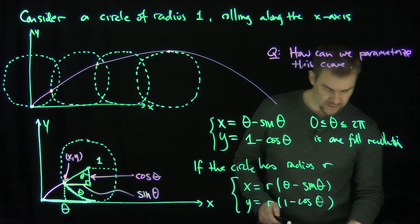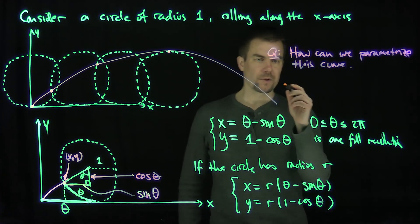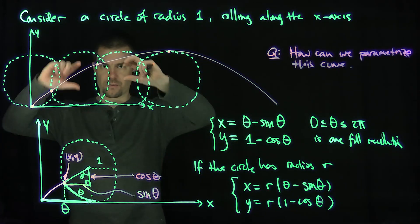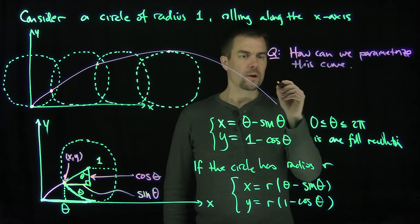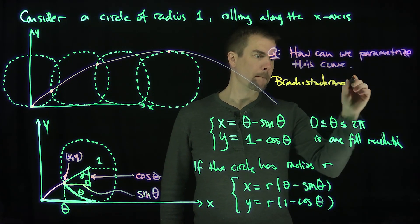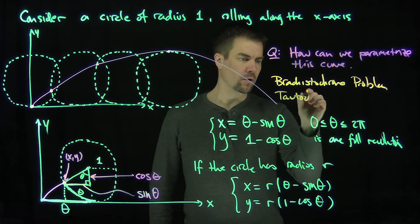Now, this cycloid is very important in physics. It satisfies two interesting questions, problems. The first question that this curve solves, well, it's not quite this curve, it's the flip of this curve, but it's close enough, right? So it solves two problems. The brachistochrone problem, and the tautochrone problem.